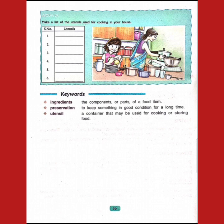Number one is ingredients — the components or parts of a food item. An ingredient is a part of a mixture only. So the meaning of ingredients is the components or parts of a food item.